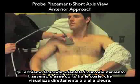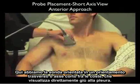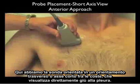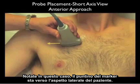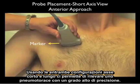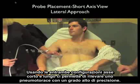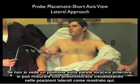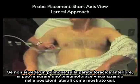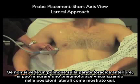Here we have the probe oriented in a transverse or short axis orientation between the ribs looking directly down at the pleura. Notice in this case the marker dot is located towards the lateral aspect of the patient. Using both long and short axis configurations will allow you to detect a pneumothorax with a high degree of accuracy. If no lung is seen on the anterior chest wall, one can size out a pneumothorax by looking in the lateral positions as shown here.